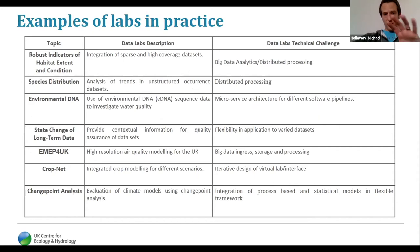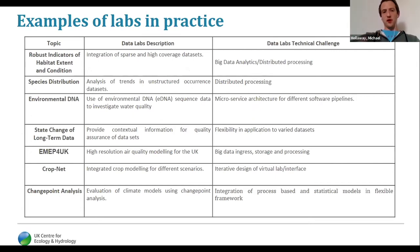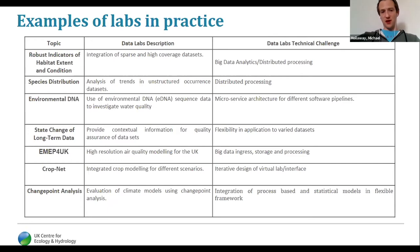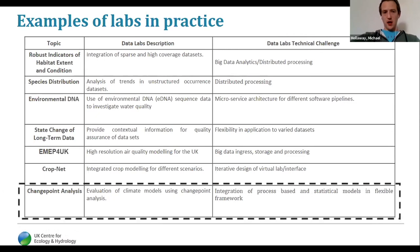All of these cases have been implemented through the Data Labs infrastructure, covering a very wide range of different challenges. For example, the EMET-UK project used the object storage on JASMIN to enable easy, high-performance access to up to eight terabytes of model data, allowing it to be processed within the Data Labs infrastructure. There's the CropNet project, which uses integrated modeling for different scenarios with an iterative design of the lab interface for accessing different codes and systems. I'm also going to present in more detail a study I was involved with, focusing on change point analysis — developing a new way of evaluating climate models using an integration of process-based models and a statistical framework, bringing together an environmental scientist and statisticians.